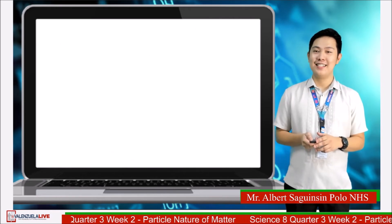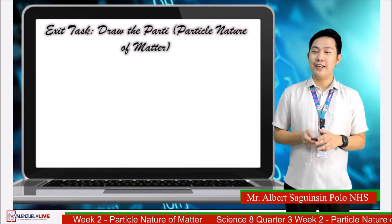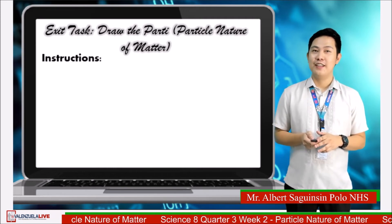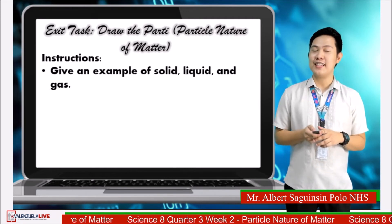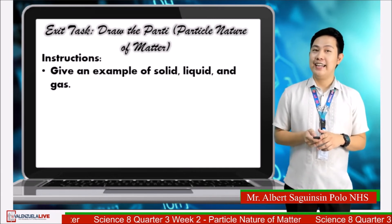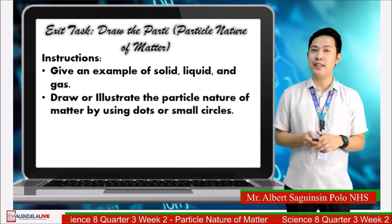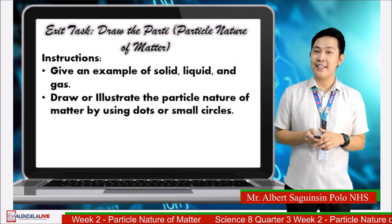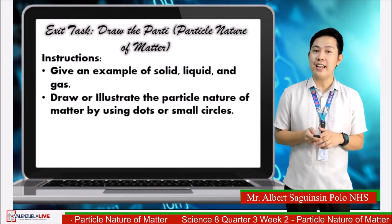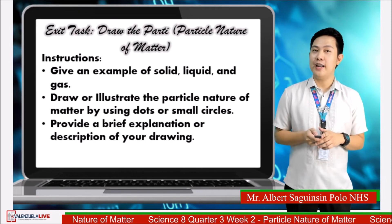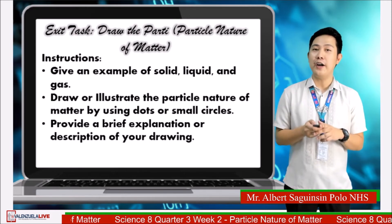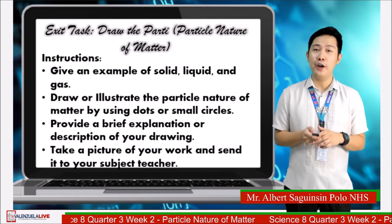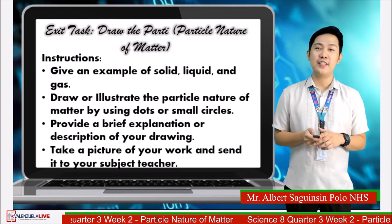For our exit task, draw the particle nature of matter. Instructions: first, give at least one example of solid, liquid, and gas. Second, draw or illustrate the particle nature of matter using dots or small circles to represent the particles. Third, provide a brief explanation or description of your drawing. Last, take a picture of your work and send it to your subject teacher.